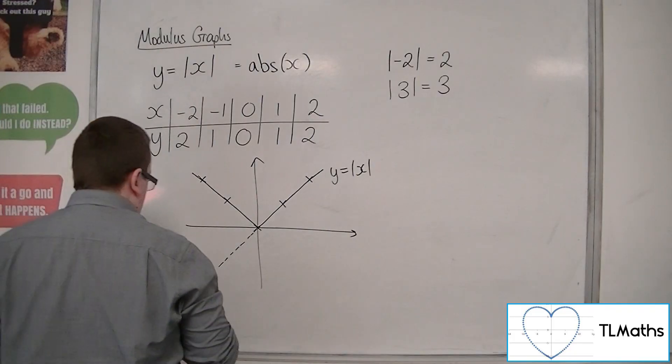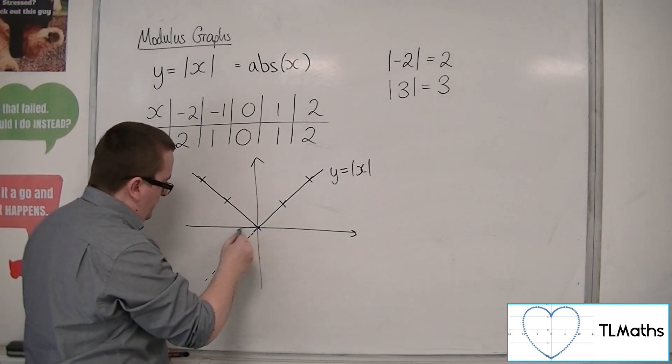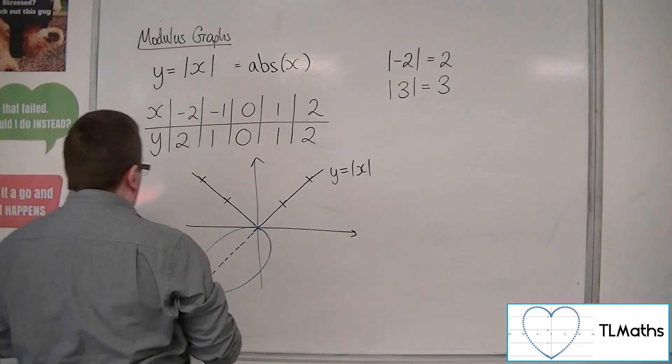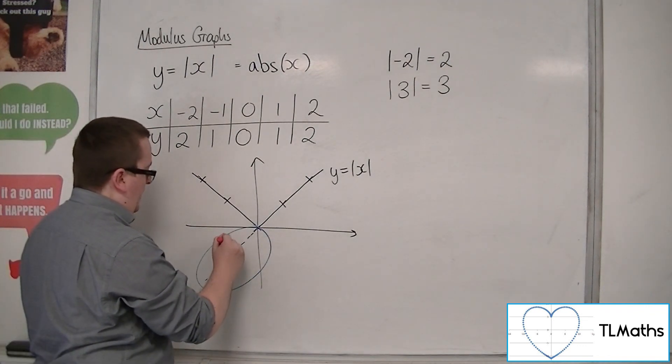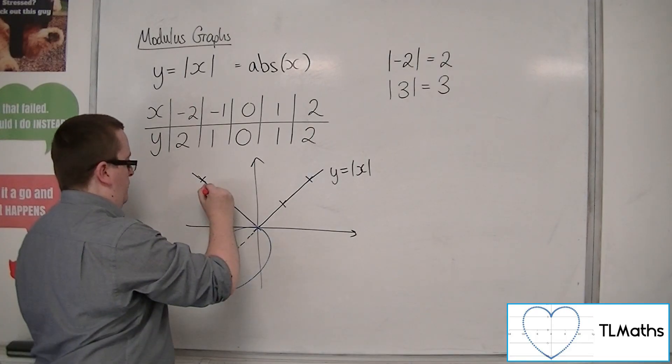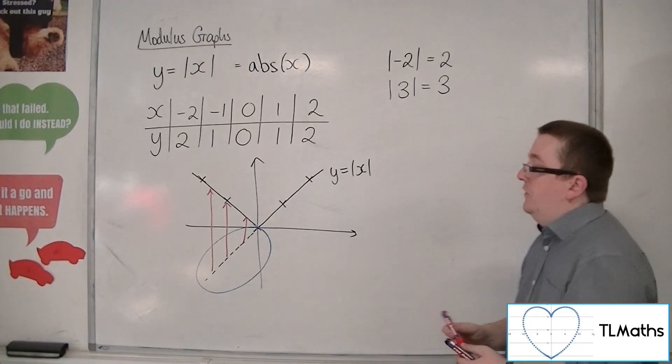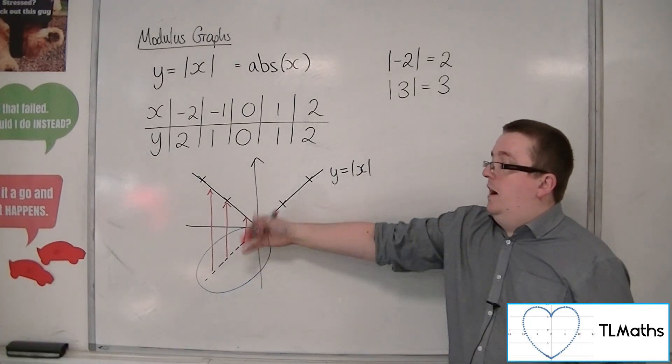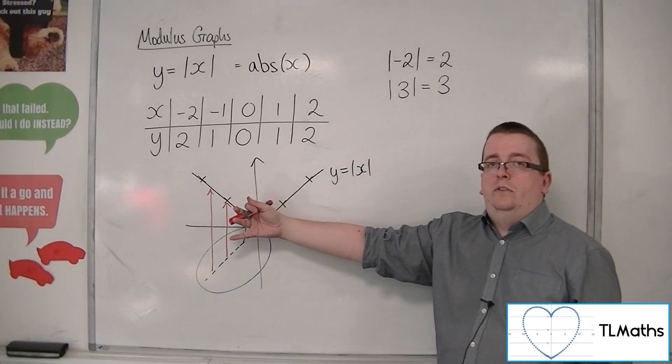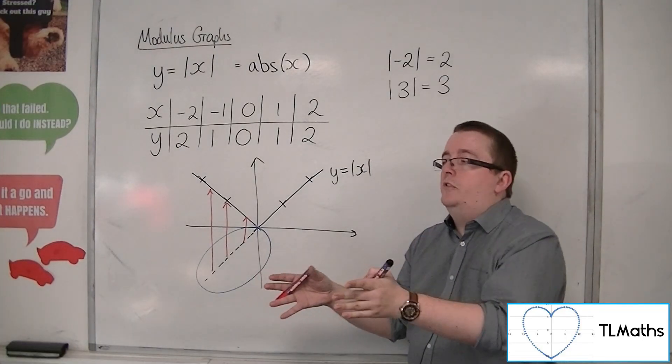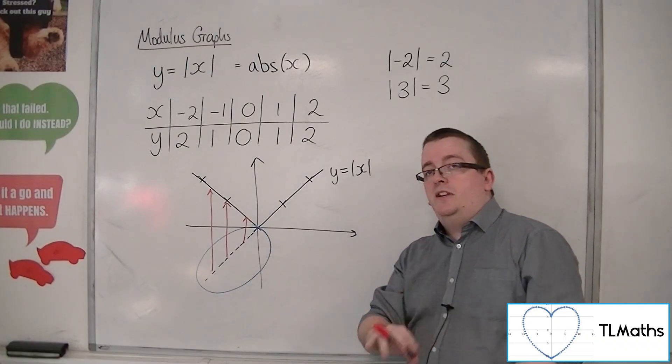Except that this part of the graph, so that part there, has been reflected up in the x-axis. OK, so everything that was below the x-axis has been reflected up in the x-axis. And this is what is true of putting modulus signs around a graph in general, and we're going to investigate some more of these in the coming videos.